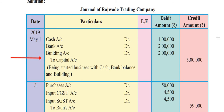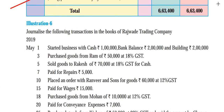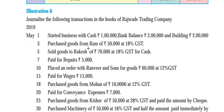The second transaction: purchased goods from Ram for Rs. 50,000 at 18% GST. This is a credit purchase entry. Purchase account will be debited. Since 18% GST is applied, we split it as 9% Central GST and 9% State GST. So we will debit purchase account, input Central GST account, and input State GST account.